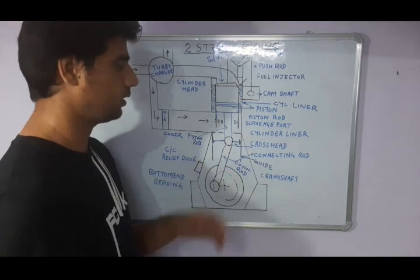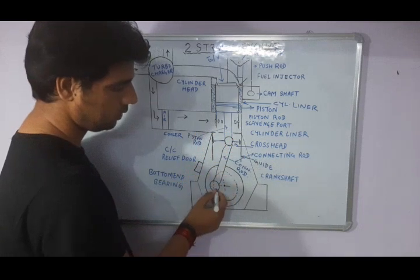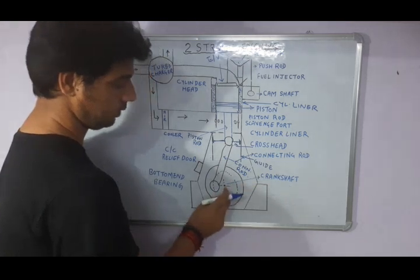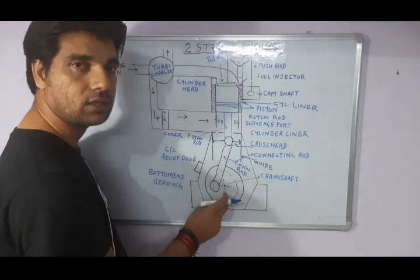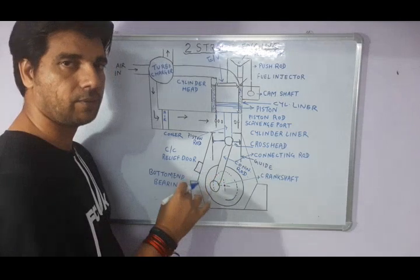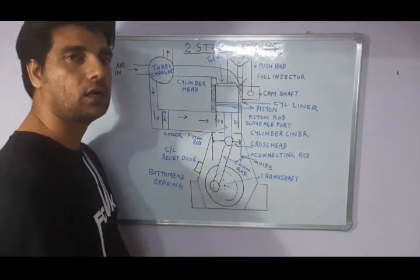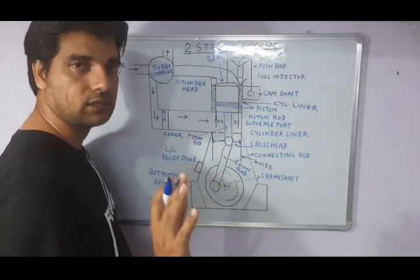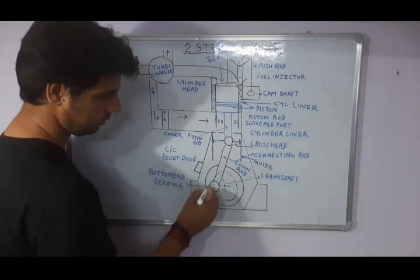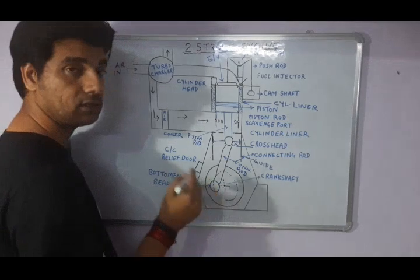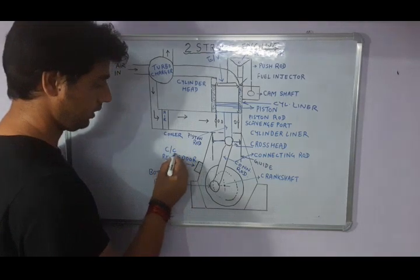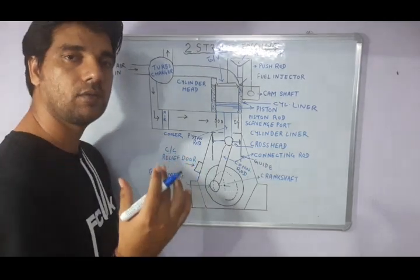The connecting rod is connected to the crankshaft — the center one here is the crankshaft, which is the main shaft of the diesel engine. The crankshaft has parts including the crank web and crank pin; the connecting rod is connected to the crank pin. This round circle is known as the bottom end bearing, which is divided into two halves. This part here is known as the crankcase relief door, used to release excess pressure from the crankcase.